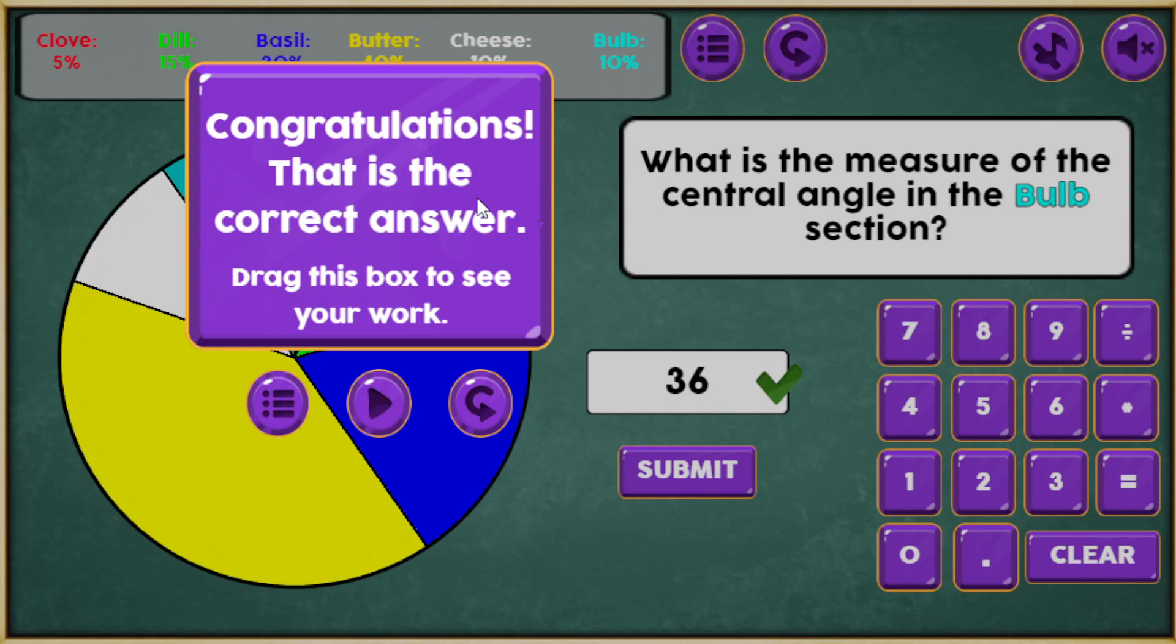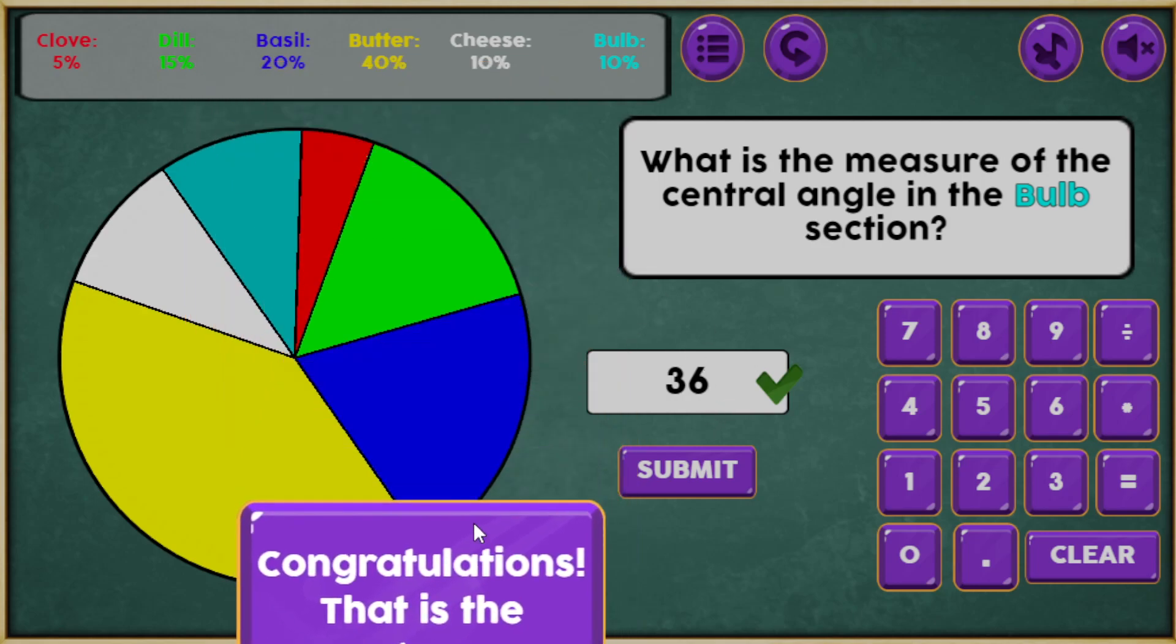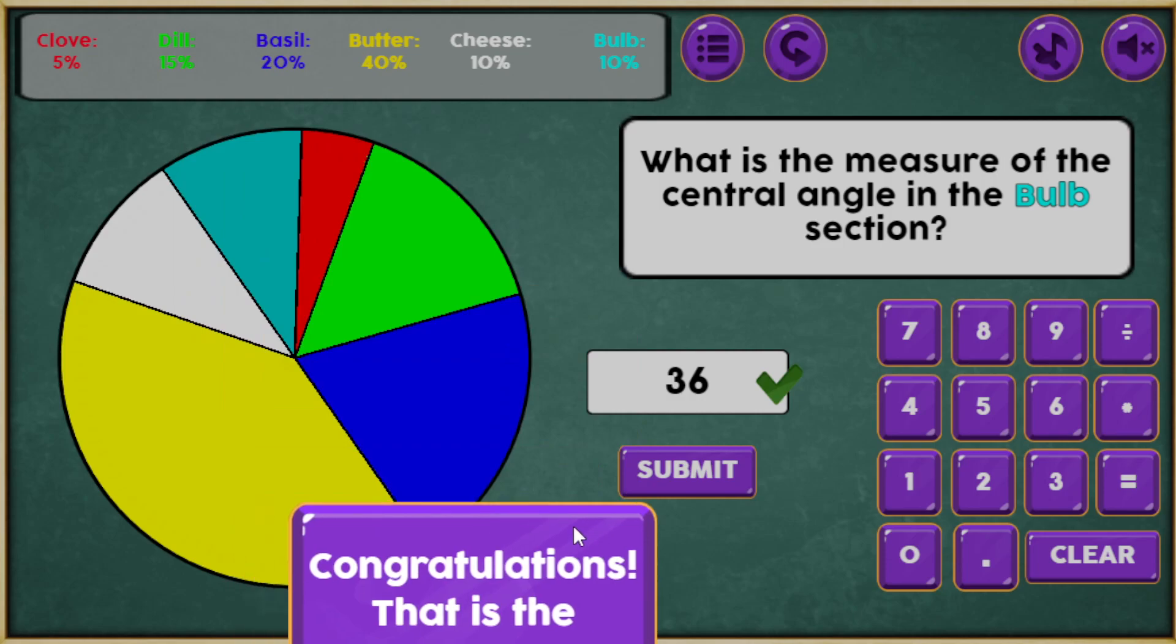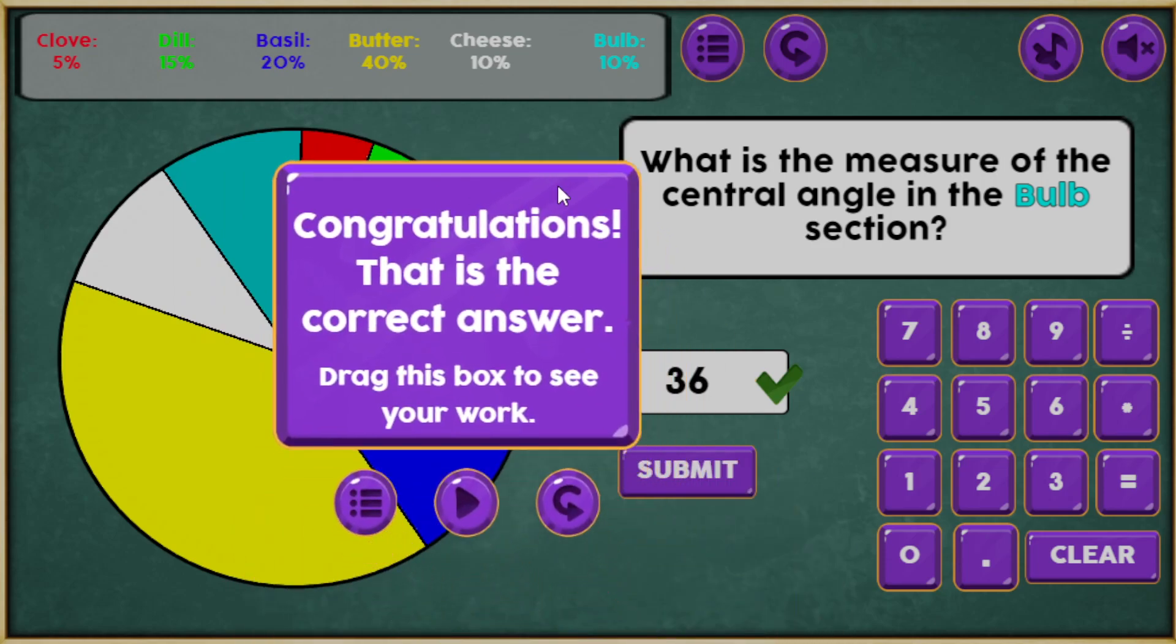If I made a wrong answer, I might want to see what I did and what I had. You can drag it down and just move it around so you can see it in case it's blocking something. And it does say that I got the correct answer and drag this box to see your work. At this point, I can go to the next problem, recycle this screen, or go to the main menu. So let's go ahead and get another one.